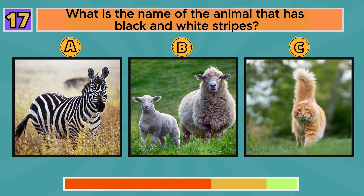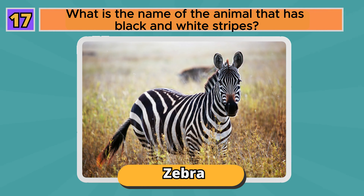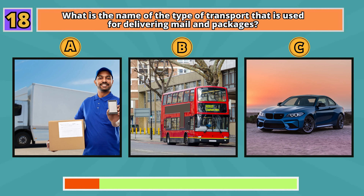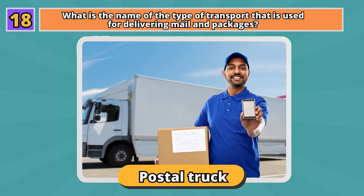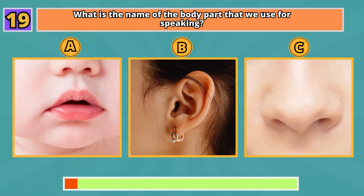What is the name of the animal that has black and white stripes? Zebra. What is the name of the type of transport that is used for delivering mail and packages? Postal truck.